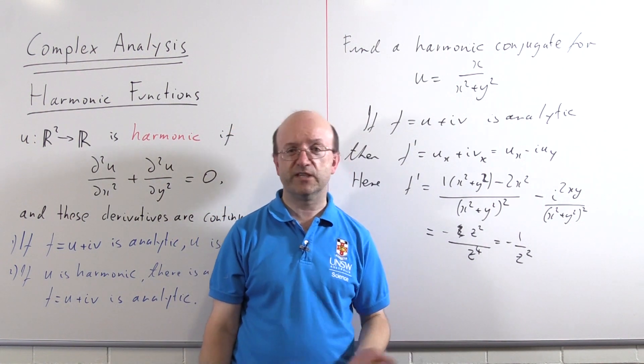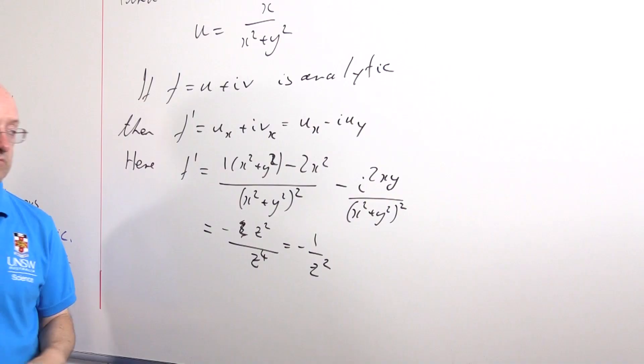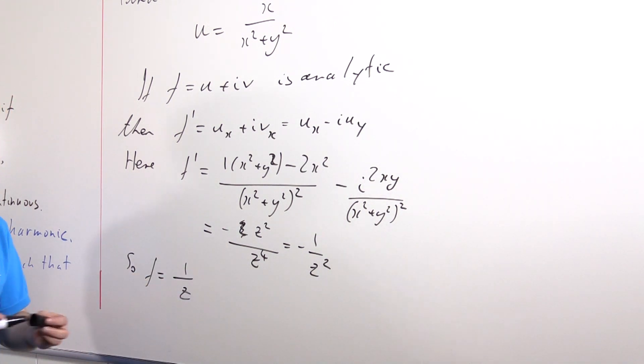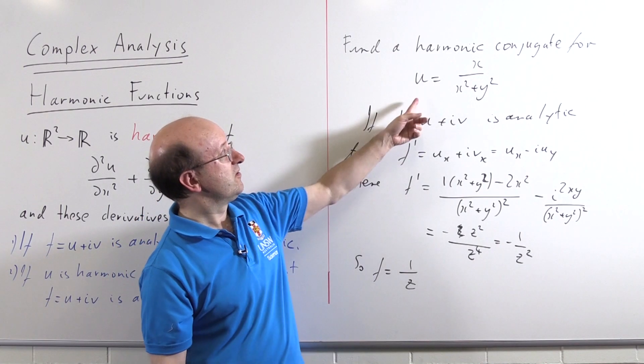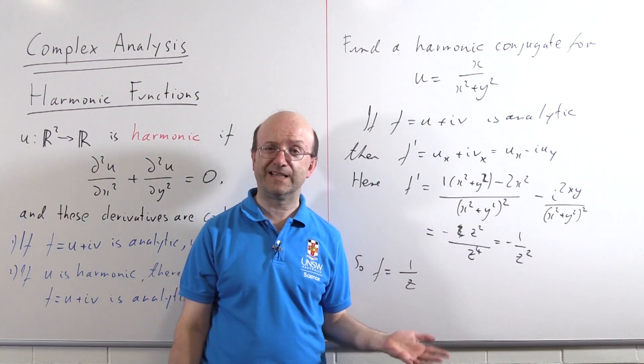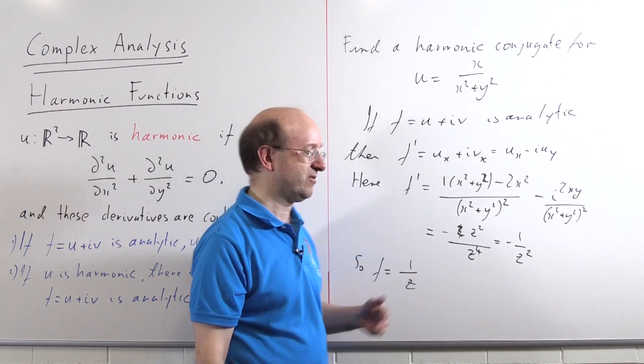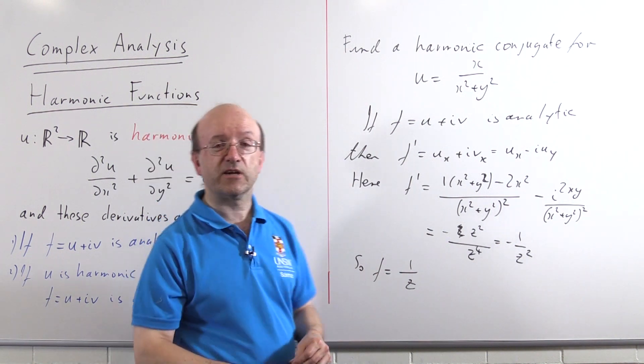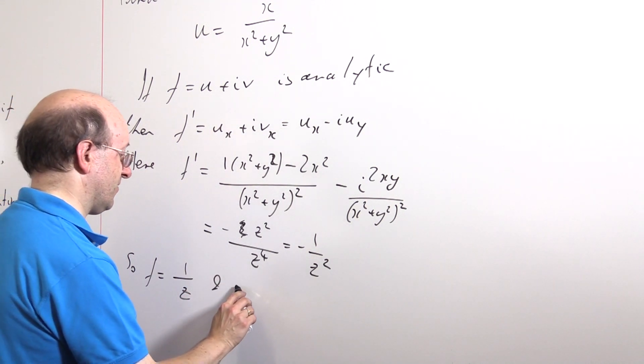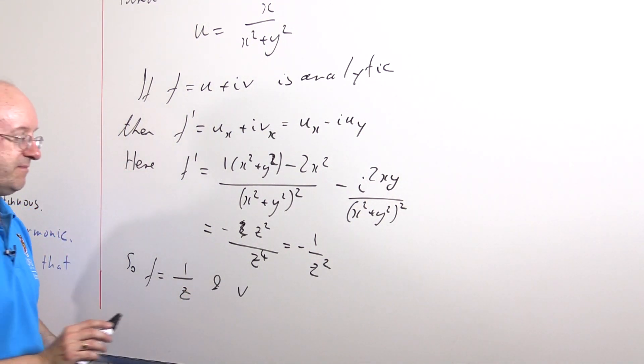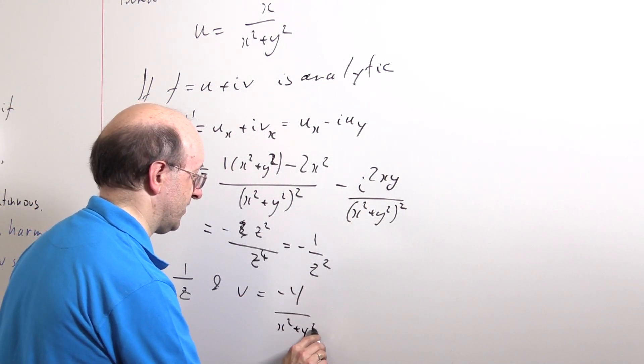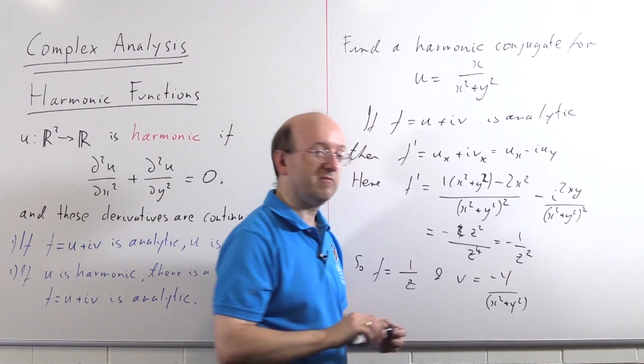Well, if f' = -1/z², f must just be 1/z. So x/(x² + y²) must be the real part of 1/z, which in fact it is. A harmonic conjugate would have to be the imaginary part of this. And the imaginary part of 1/z is -y/(x² + y²). And that's the problem solved.